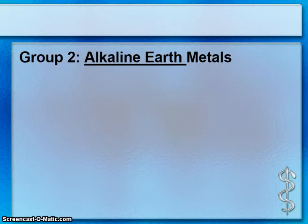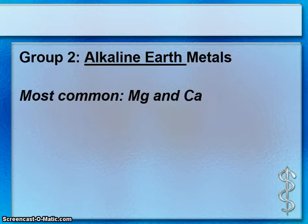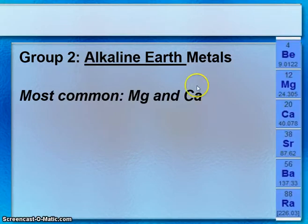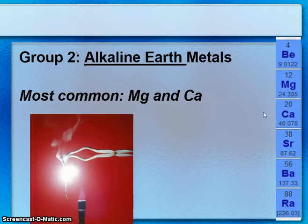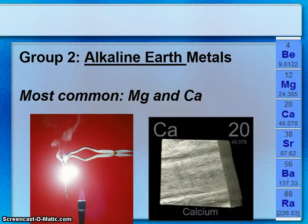Group 2 are called the alkaline earth metals. The two most important and common alkaline earth metals are magnesium and calcium. Both are essential elements to humans. Here's a picture of magnesium being burned and a piece of calcium.